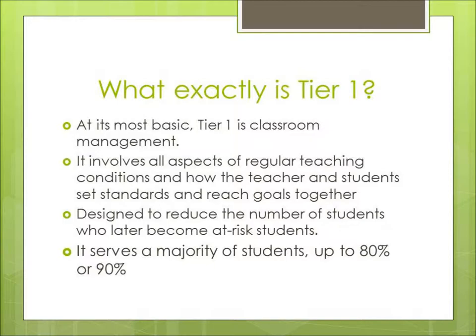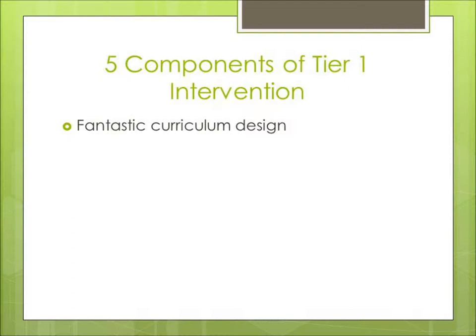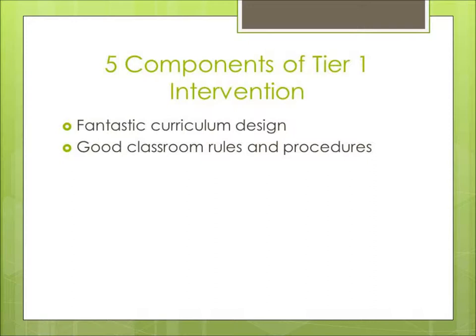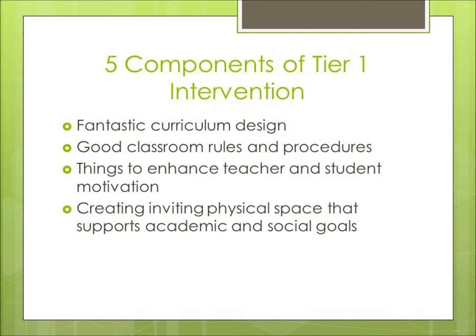There are five key components of Tier 1 intervention. The first is fantastic curriculum design. With great curriculum as an immediate resource, teachers have great lessons and activities at the very tip of their fingers. Having good classroom rules and procedures is another part of Tier 1, because without structure in the class, nothing can ever be learned. The third component is centered around motivation — motivation is key in the classroom. Without the students, as well as the teacher, being motivated to actively learn and grow together, only temporary learning will take place. Another essential part of Tier 1 is the creation of a physically inviting and safe environment, which supports both academic and social growth. The final element is collaboration with the families of the students, as well as the community.